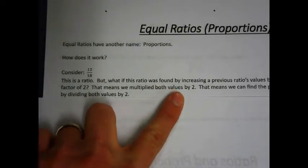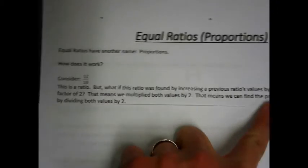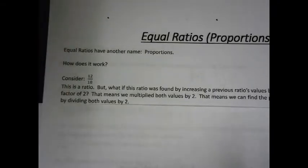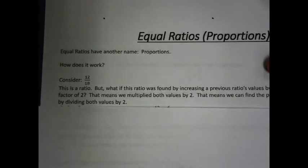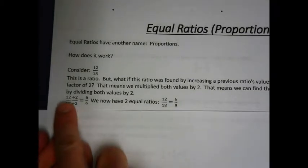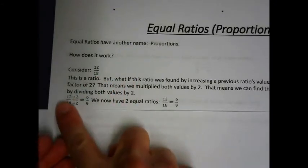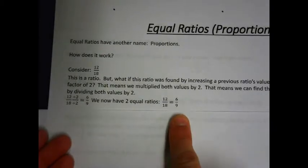That means we multiplied both the values we were comparing by 2. So we can find the previous ratio by dividing both of these values by 2 — both the numerator and denominator are being divided by 2. We end up getting 6 to 9.